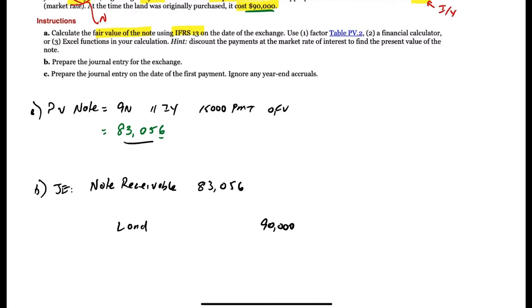And there's no indication that the land had undergone any impairment. And if we take the difference between our debits and credits, we can see that in order to make this balance, we need a debit of $6,944, and that has to be a loss on disposal.